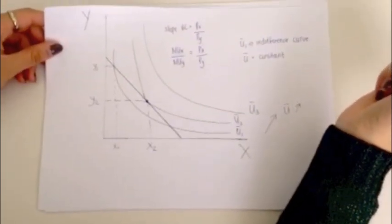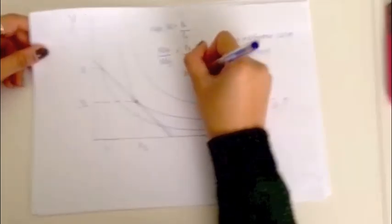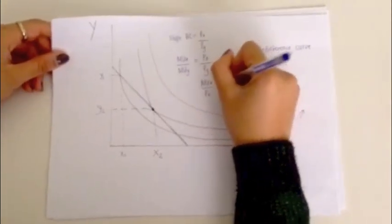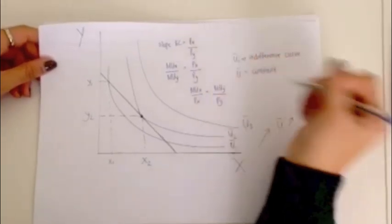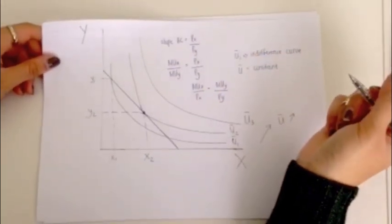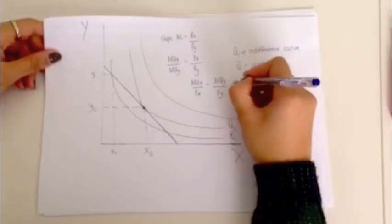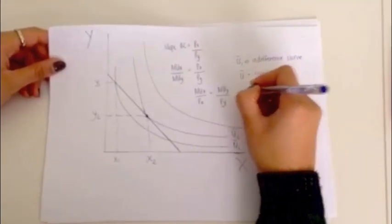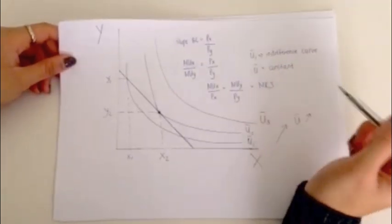And therefore, you can also say that the marginal utility of X over the price of X equals the marginal utility of Y over the price of Y. And that is the definition of marginal rate of substitution mathematically. How much are you maximizing? Basically, are you maximizing your utility for every last dollar, for the last dollar spent?